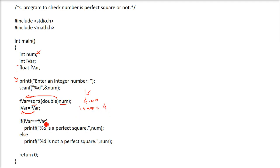Now we will compare i var with f var, that is, we will compare 4 with 4.00. If they are equal, because 4 and 4.00 are equal, it's a perfect square.